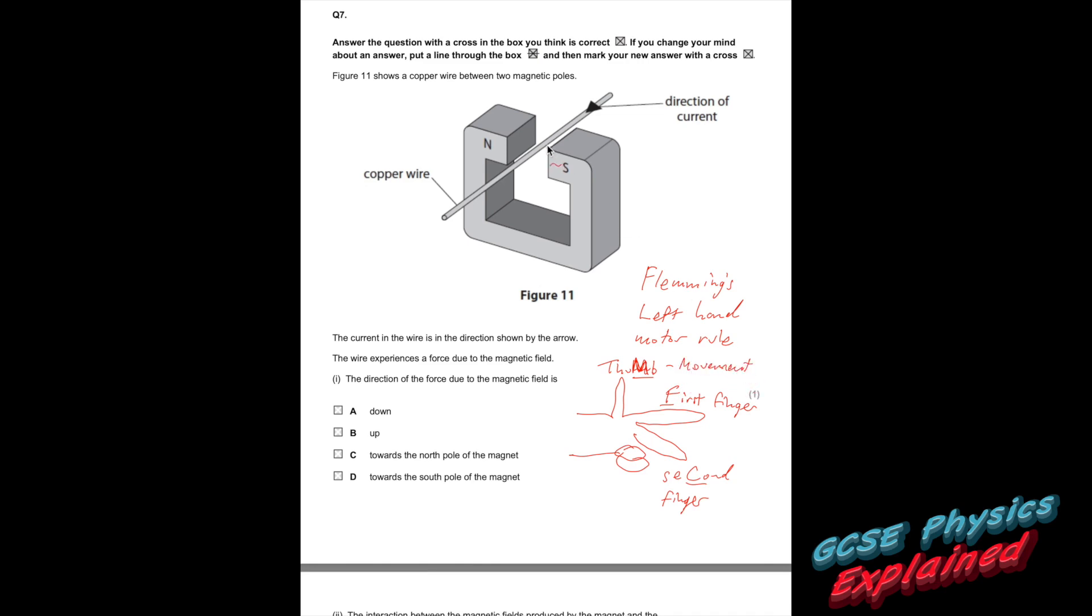The thumb shows you the movement. So in other words, it's going to indicate which way the wire is going to move. Some people say thumb, which shows the direction of the force. And the force will obviously make the movement happen. The first finger is the magnetic field. And the second finger shows you the direction of the current.